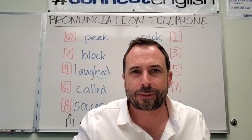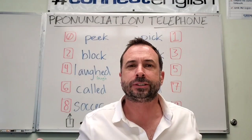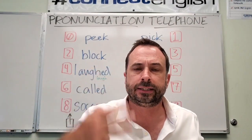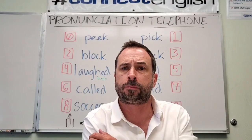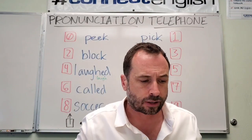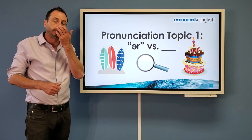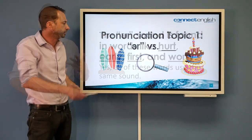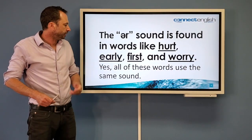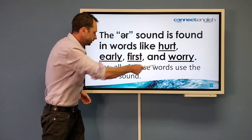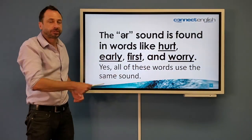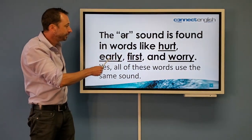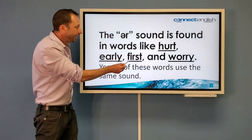So let's talk about the program and what's included in it. The three areas included in the English That's Useful Right Now program are: pronunciation, of course. This is one of the strongest things that students around the world on the Internet know Connect English for — our pronunciation lessons are excellent. We've got pronunciation lessons in this program.